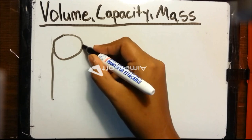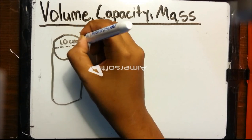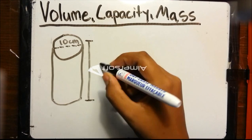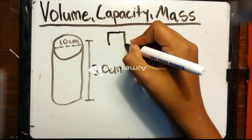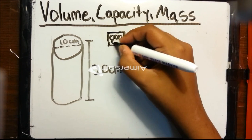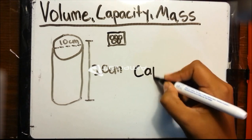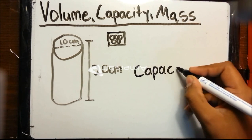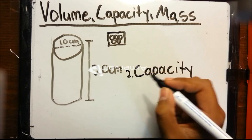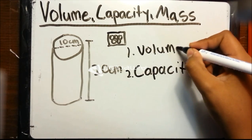Let's say you have a cylinder which has a diameter of 10 centimeters and a height of 20 centimeters. You want to fill it up with water at 4 degrees Celsius. To do this, you need to figure out the capacity of this cylinder. But that comes second — first, you need to figure out the volume of the cylinder.